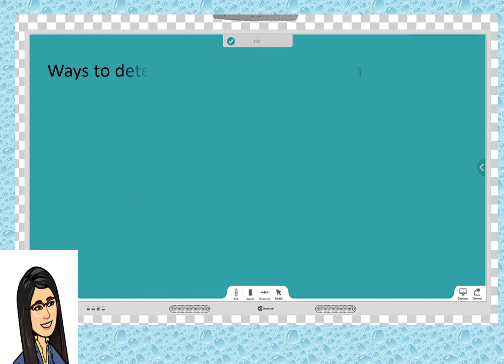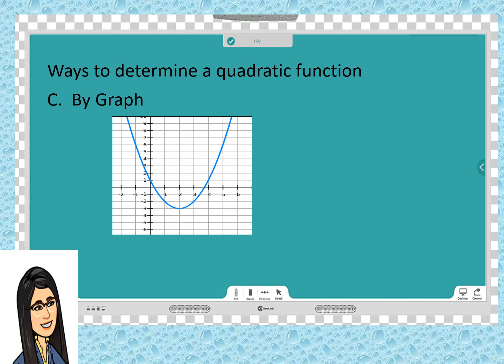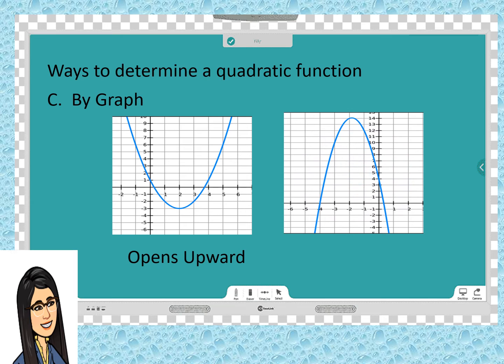Another way to determine a quadratic function is by graph. Observe the curve formed in the Cartesian plane. It is a parabola. The parabola opens upward. On the other hand, the other graph is inverted parabola. It opens downward. So, anytime you draw and arrive at any of this graph, we can say that we have quadratic function.